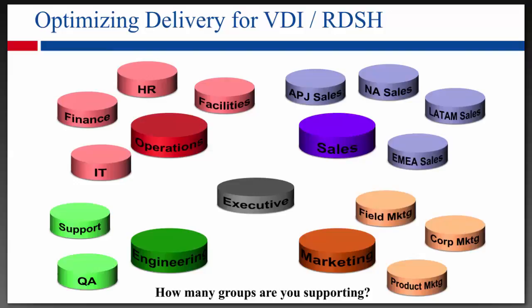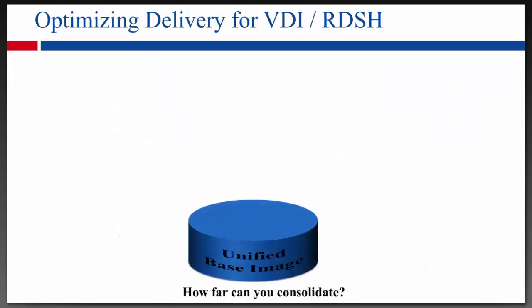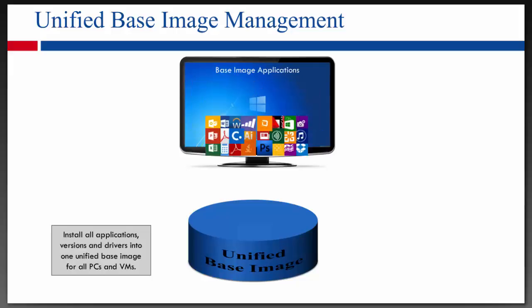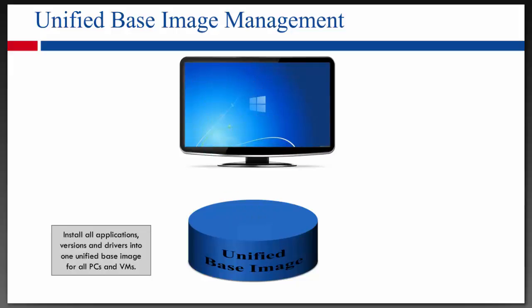Think about all the different use cases and groups you're supporting today in your environment — the number of images, image sprawl, overhead management, those types of things. With FSLogix, we can consolidate those down into a unified base image. We can install all the applications, different versions of Office and so forth, into the base image, whether it's physical, virtual, XenApp, XenDesktop, VMware, or Microsoft — pretty much any use case as long as it has Windows on it.